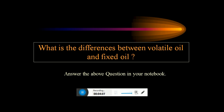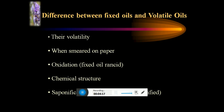Coming to the question: what is the difference between volatile oil and fixed oil? Pause the video for a minute and try to answer this question. Volatile oils are volatile in nature at room temperature, their volatility is high, and on paper they do not leave any permanent stain. On oxidation, a fixed oil becomes rancid, and on the basis of chemical structure, it differs from volatile oils. It can be said that the two types of oils are not easily saponified in the same way.